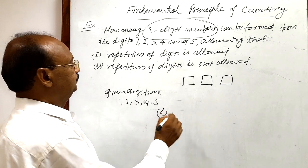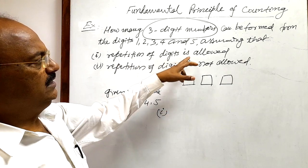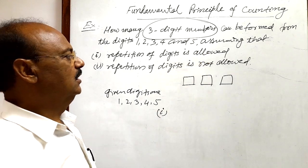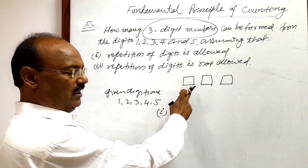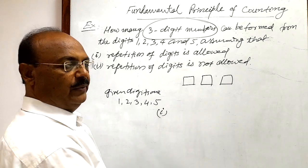So for the first part, when repetition of digits is allowed, in that case, this place, hundreds place, can be filled up in how many ways?